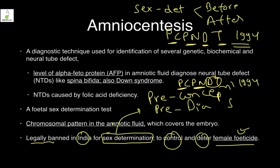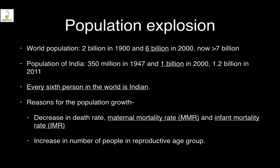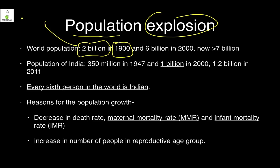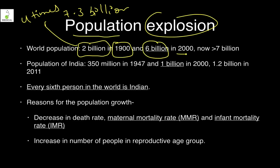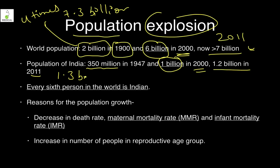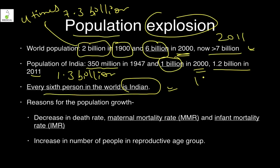Regarding population explosion: in 1900, the world population was 2 billion; now it is almost four times that — touching 7.3 billion. Six billion was reached in 2000, and 7 billion in 2011. In India, at independence we were 35 crores; in 2000 we became 1 billion; now in 2011 we are 1.2-1.3 billion. Every sixth person in the world is an Indian, and that may change to every fifth person very soon.